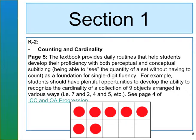As we look at K-2 counting cardinality, beginning on page five of your toolkit, the textbook provides daily routines that help students develop their proficiency with both perceptual and conceptual subitizing — being able to see the quantity of a set without having to count. Looking at a grid of ten boxes filled with seven circles, are students able to recognize a set pattern? If seven of ten boxes are filled, will they be able to tell that three are missing? Can they also rearrange the seven — for example, as four and three, five and two, or one and six?